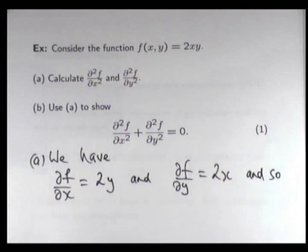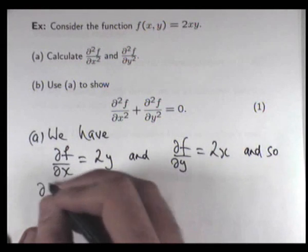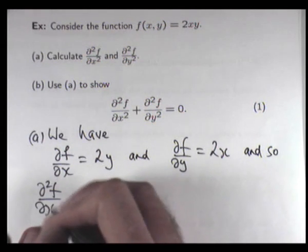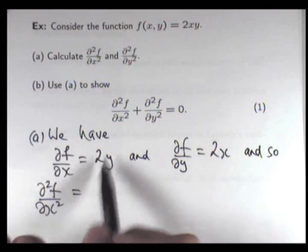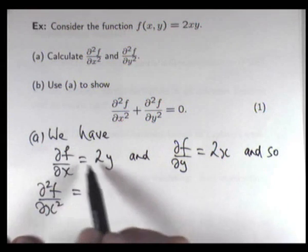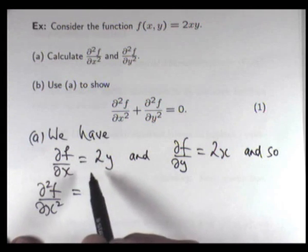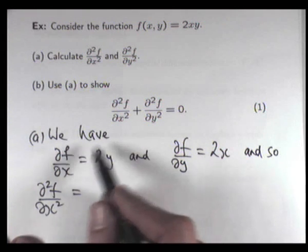So let's go and calculate the second. So again, you can see I'm using the curly denotation here. So if I go up to here and take the partial derivative with respect to x, well, y is constant. So this is just going to be 0.